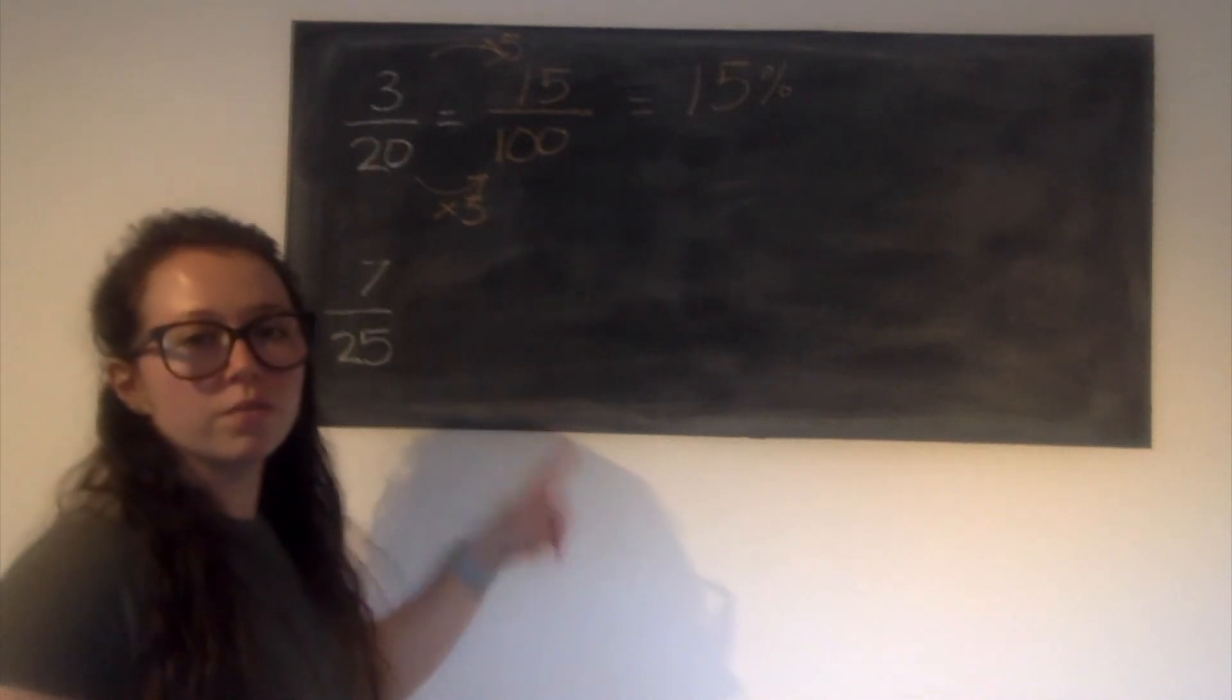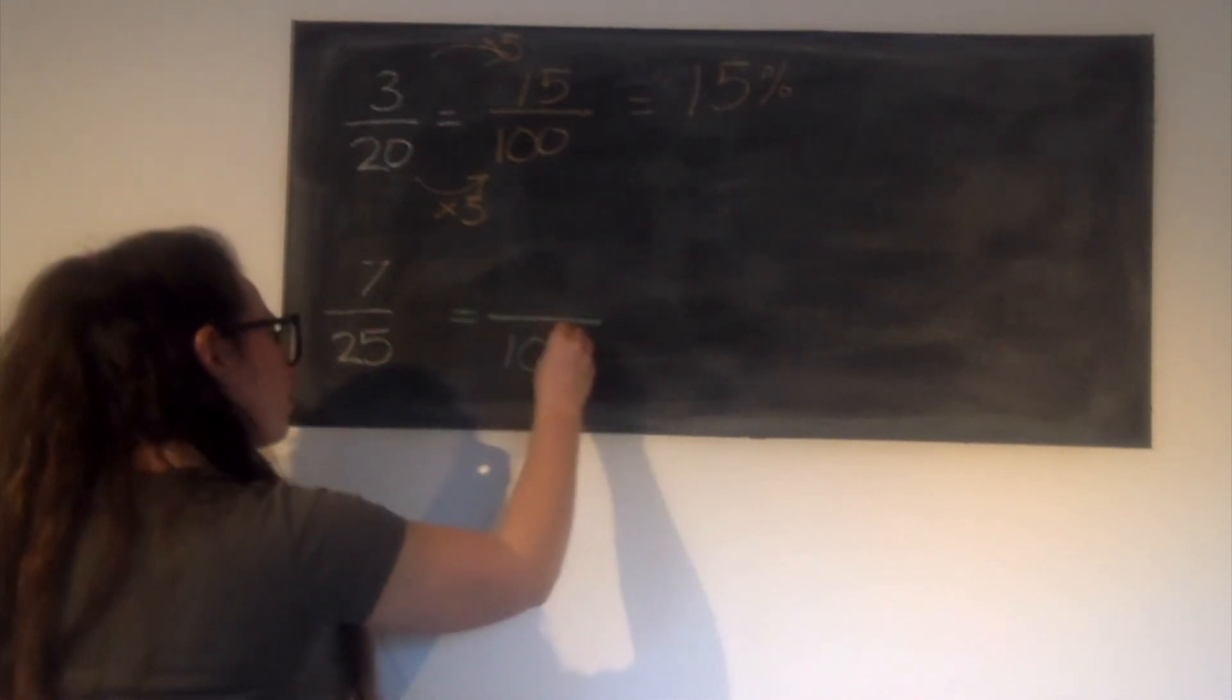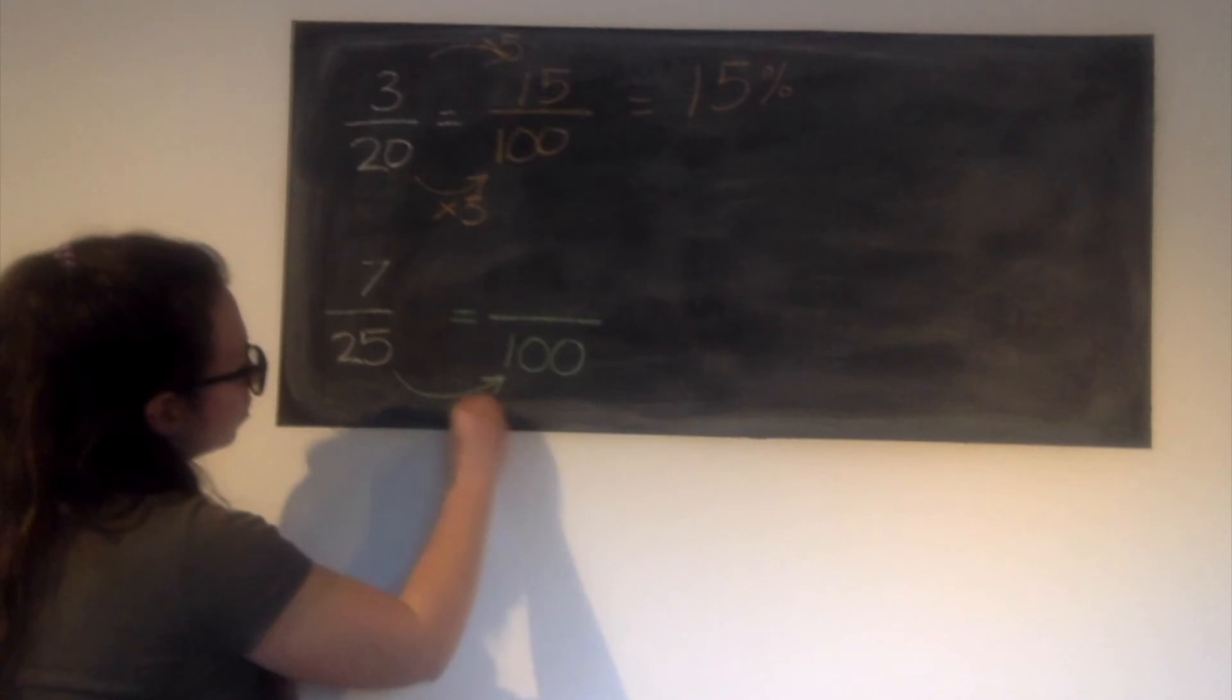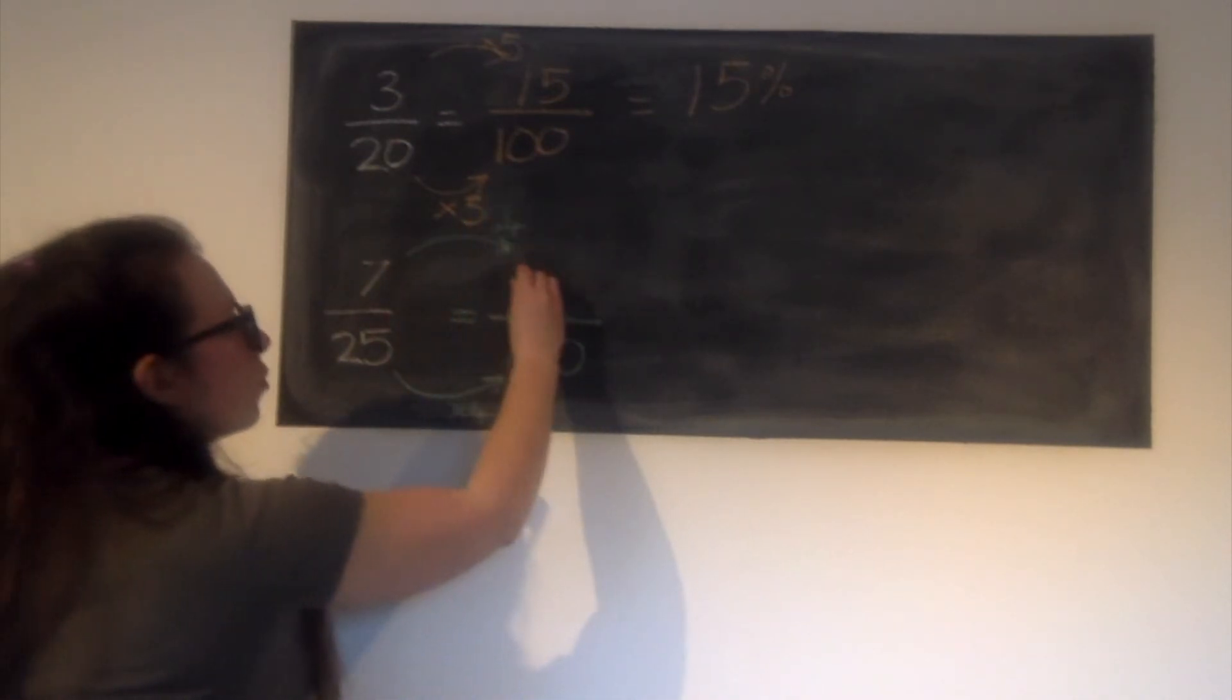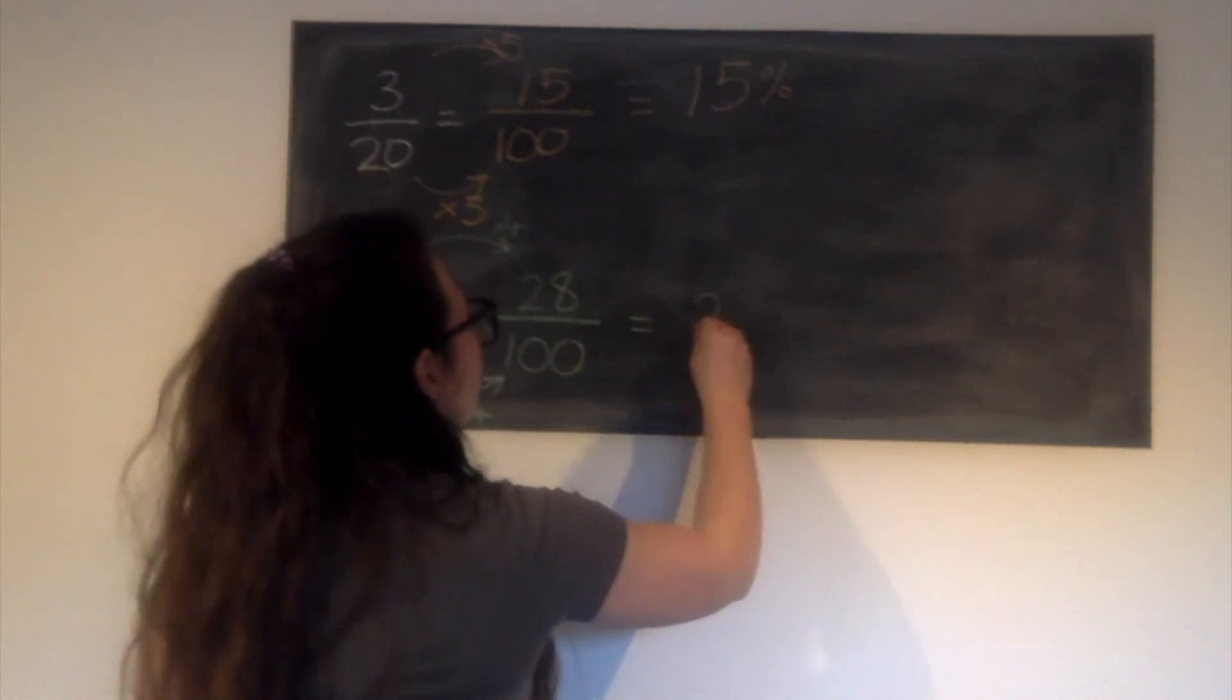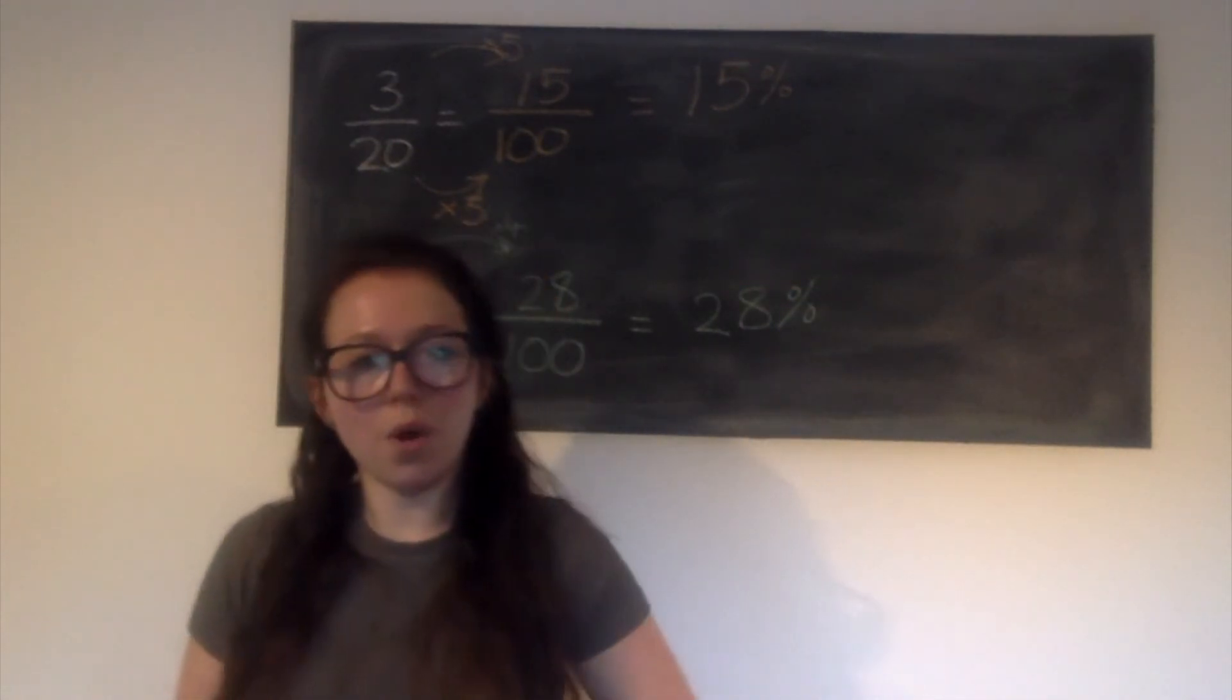So 7 twenty-fifths. So the same. I need my denominator to be hundredths. What am I doing from 25 to get to 100? Well I've multiplied it by 4. I must do the same to the top. 7 multiplied by 4 gives us 28. I now have a fraction with a denominator of 100. That equals 28%.